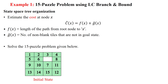Here we will solve the 15-puzzle problem using the least cost branch and bound method. This method is used to minimize the cost, and we will use the state space tree to solve the problem. The state space tree will have a set of nodes and branches. Due to the least cost branch and bound approach, we have to calculate the cost for each and every vertex in the given tree.